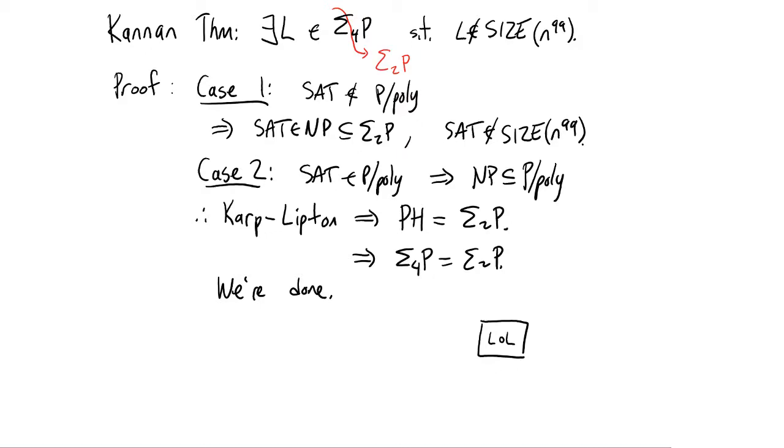So at the end of the day, we're not exactly sure what is the language L, which is in sigma 2P, but not in size n to the 99. It could be SAT. SAT is definitely in sigma 2P. We're not sure if it's not in size n to the 99. Probably isn't, but we didn't prove it.